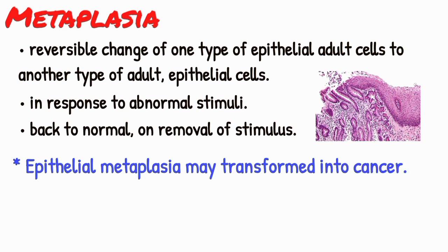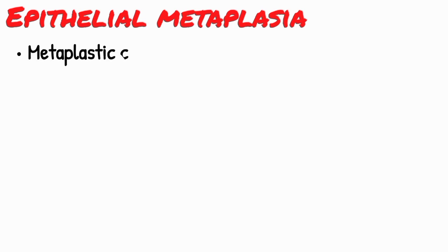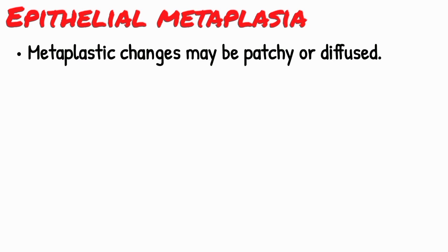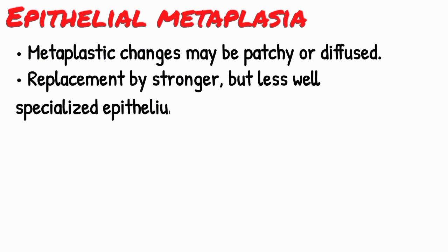Metaplasia is broadly divided into two main types: epithelial and mesenchymal metaplasia. Epithelial metaplasia is the more common type, in which metaplastic changes may be patchy or diffused, and usually result in replacement by stronger but less well-specialized epithelium.